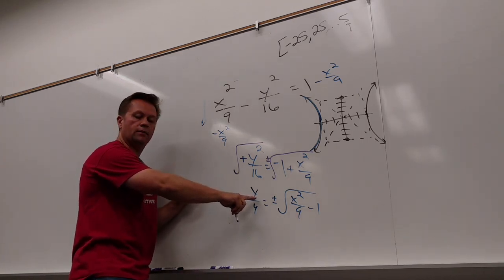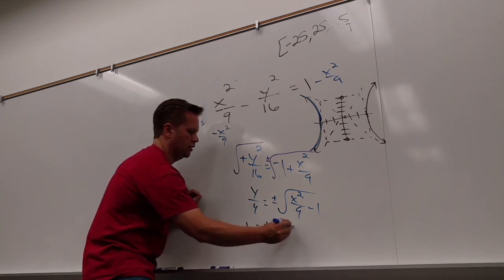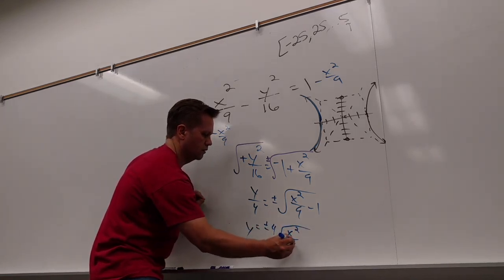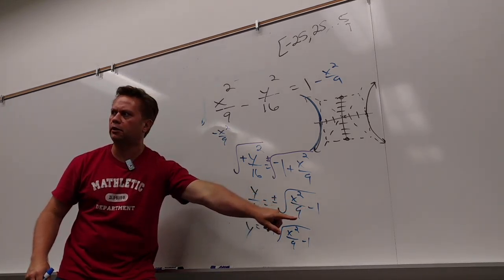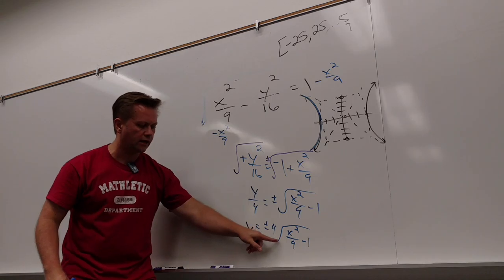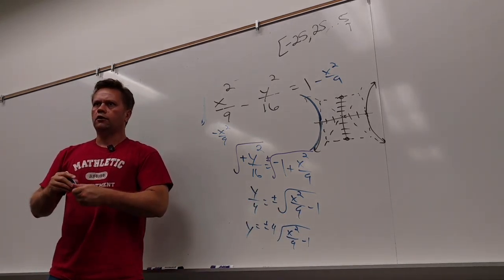And now one more step and I've got y by itself. Yeah, so it'll be y equals plus or minus 4 times this. And now I could put y1 as the positive 4 times blah, blah, blah. And y2 is the negative 4 times blah, blah, blah. And graph those.